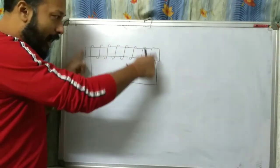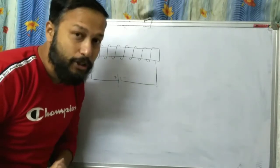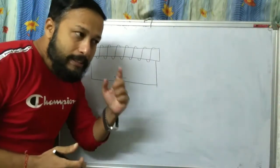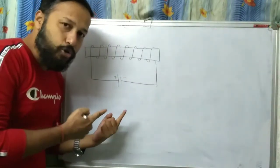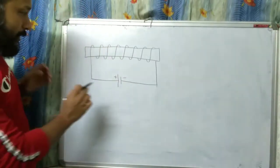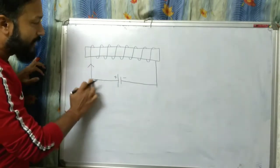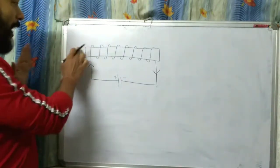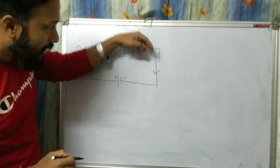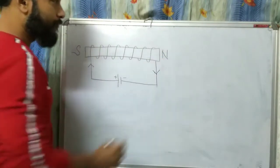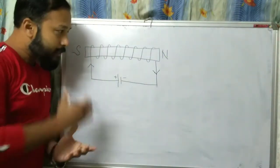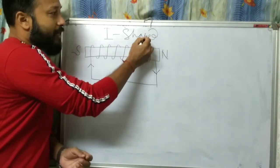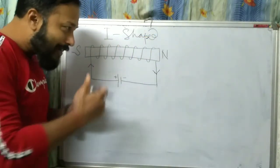Now connect a cell — positive and negative — to this setup. In this condition, this iron bar will behave like a bar magnet, with both a north pole and a south pole. The direction current is going into will be the south pole, and the end from which current is coming out will be the north pole. This is called the I-shaped electromagnet, and it's important for your exam.